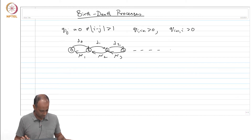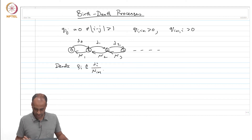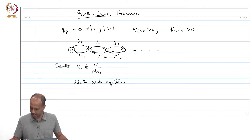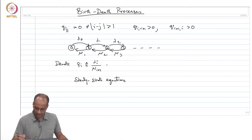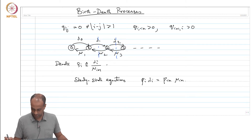For this kind of birth-death process, we can denote rho_i as lambda_i over mu_{i+1}. If you write out the balance equations or steady-state equations, just like in the discrete case, you will notice that there is automatic balance across each of these transitions. You will have equations that look like: P_i * lambda_i equals P_{i+1} * mu_{i+1}, for i greater than or equal to 0.